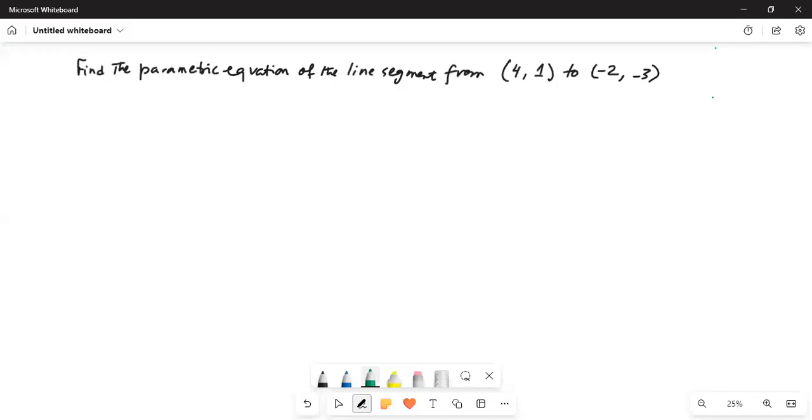It says: find the parametric equation of the line segment from (4, 1) to (-2, -3). Solution: